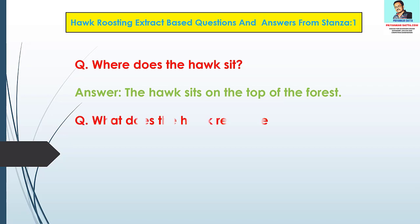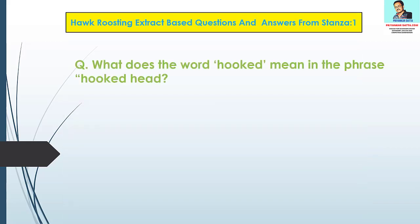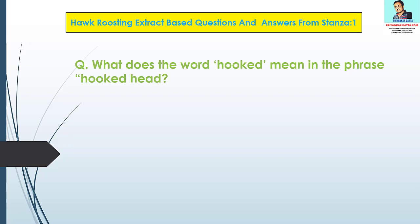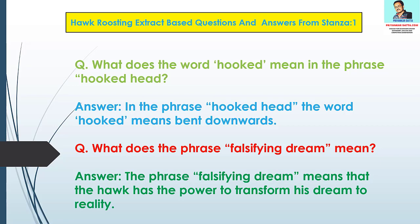Question 2: What does the hawk rehearse in his sleep? Answer: In his sleep the hawk rehearses how he can make the act of killing and eating other creatures perfect. Question 3: What does the word hooked mean in the phrase hooked head? Answer: In the phrase hooked head, the word hooked means bent downwards. Question 4: What does the phrase falsifying dream mean? Answer: The phrase falsifying dream means that the hawk has the power to transform his dream to reality.